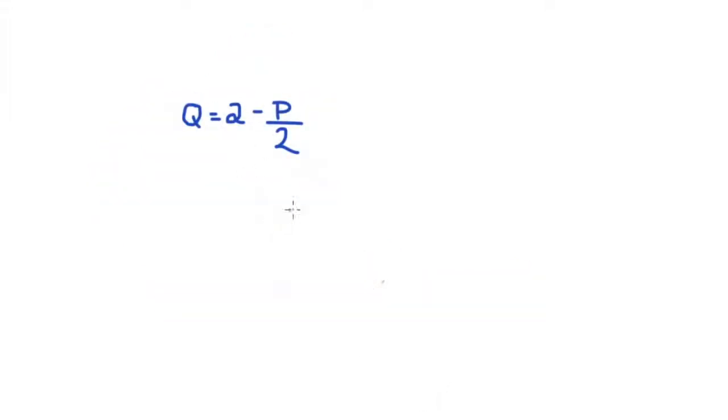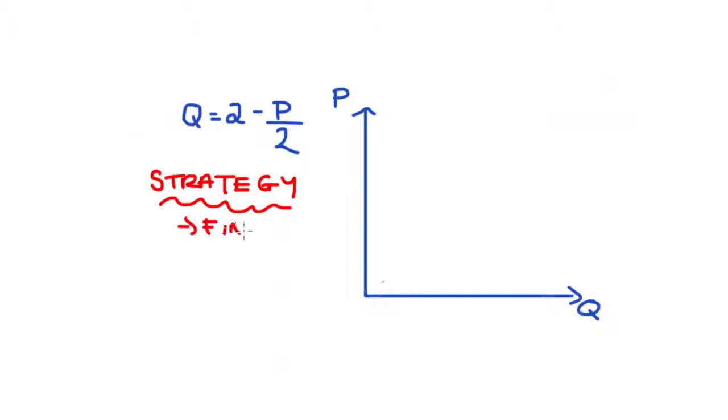In example 2, Q is isolated on the left-hand side, so we cannot take the constant term here and treat it as a vertical axis intercept as we did in the first example. So our strategy is simply just going to find the price and quantity axis intercepts by substituting Q = 0 to find our price axis intercept and P = 0 to find our quantity axis intercept into the demand function respectively.